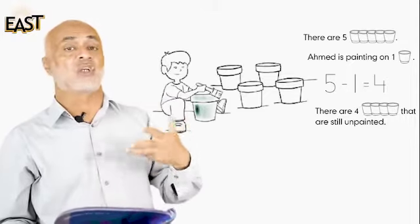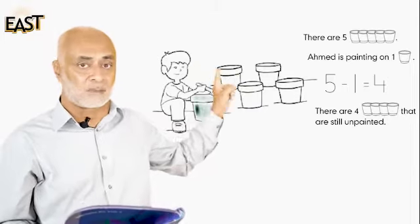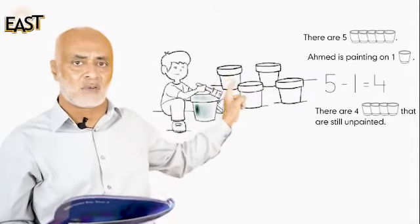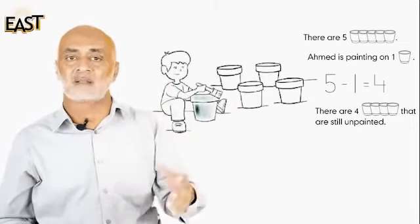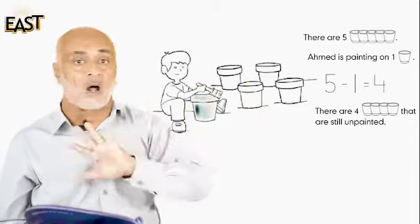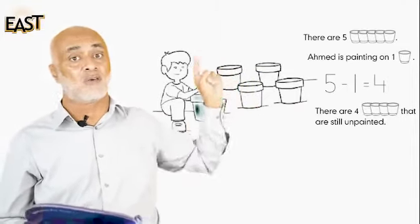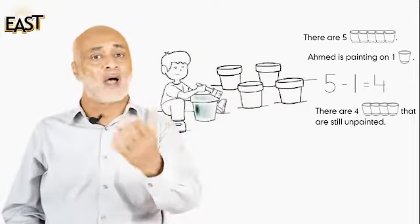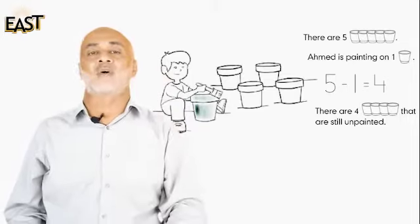Five minus — subtract, take away — this tiny sign in between is called subtract, or minus, or take away — one. So how many pots we have left which are not painted? Let's count — one, two, three, four. You see, five take away one, you have four.